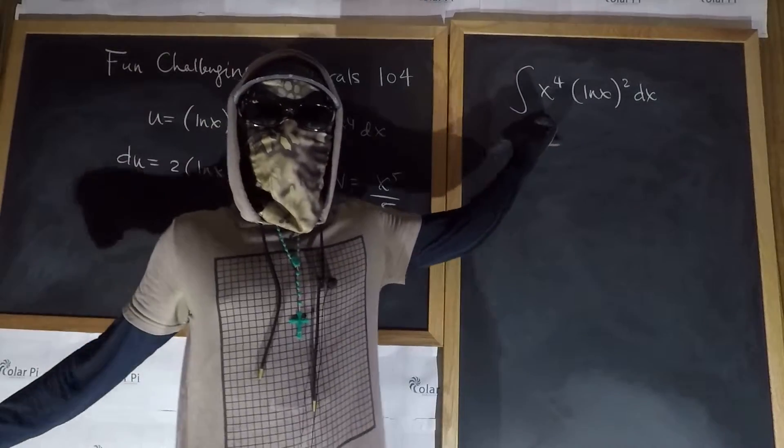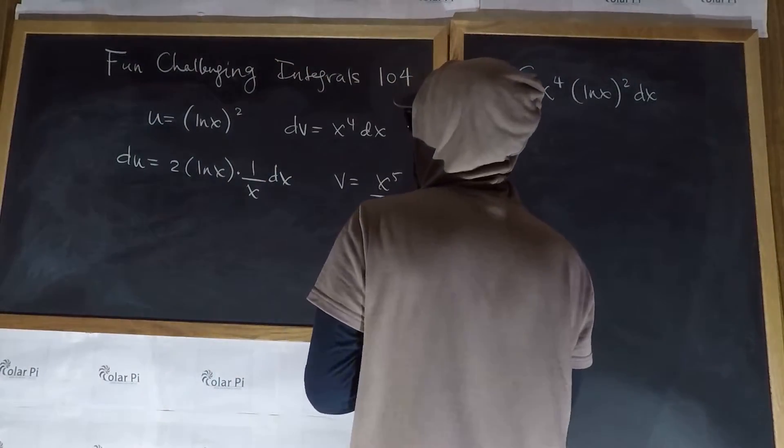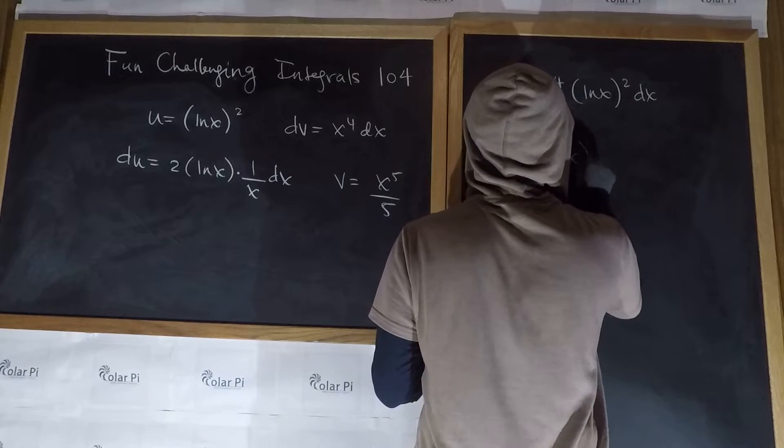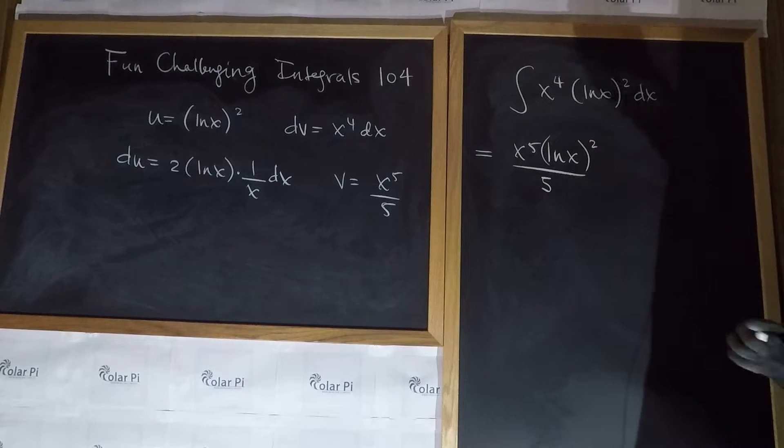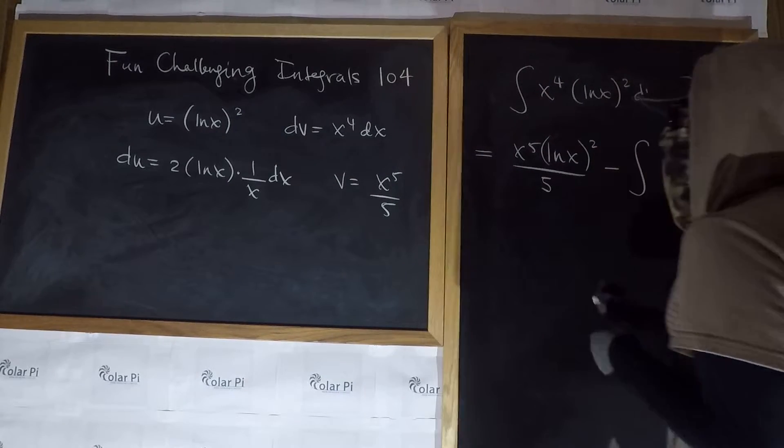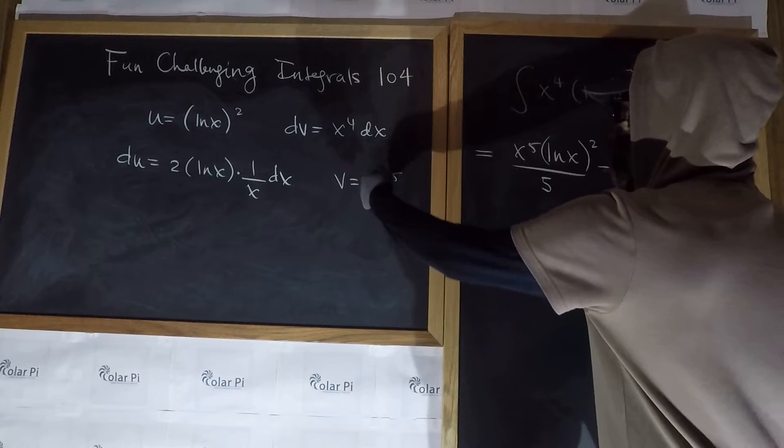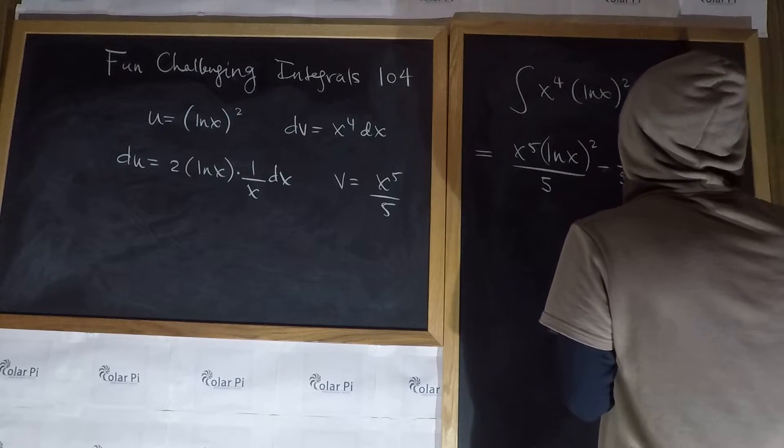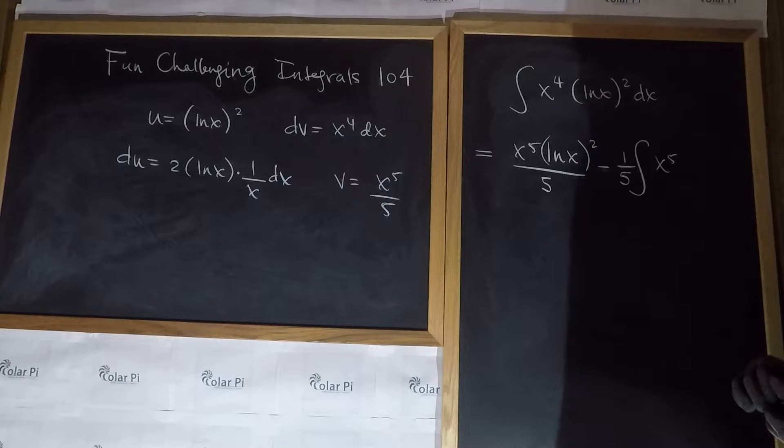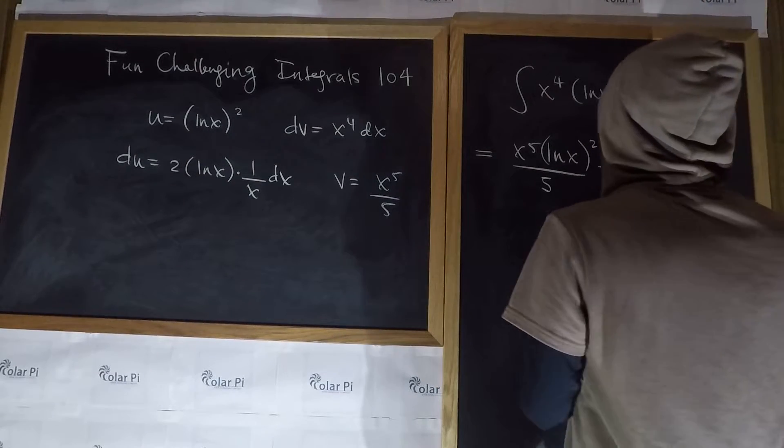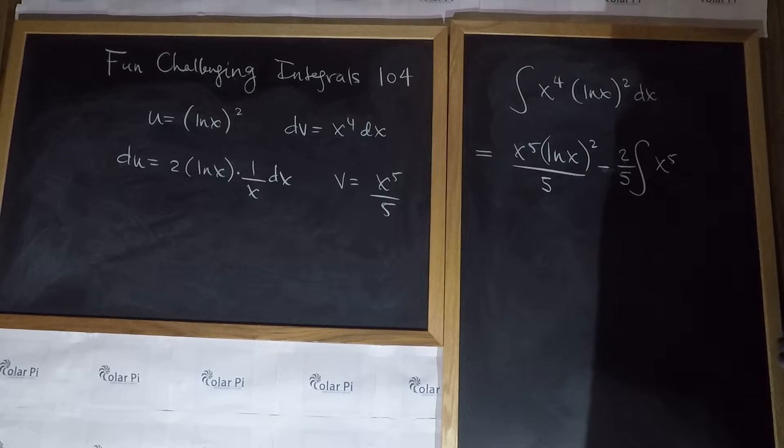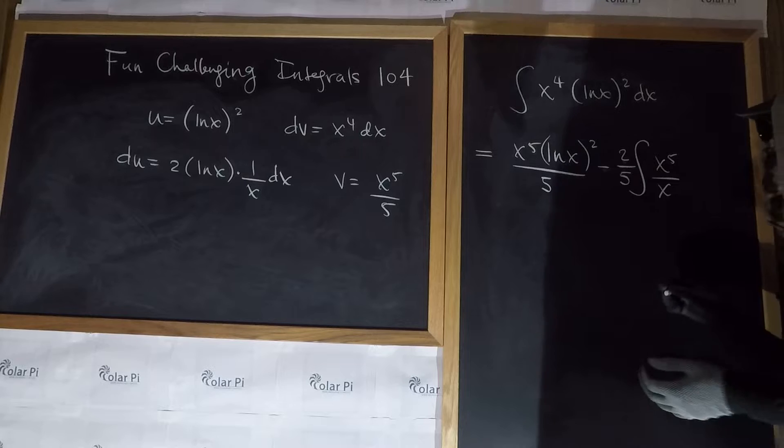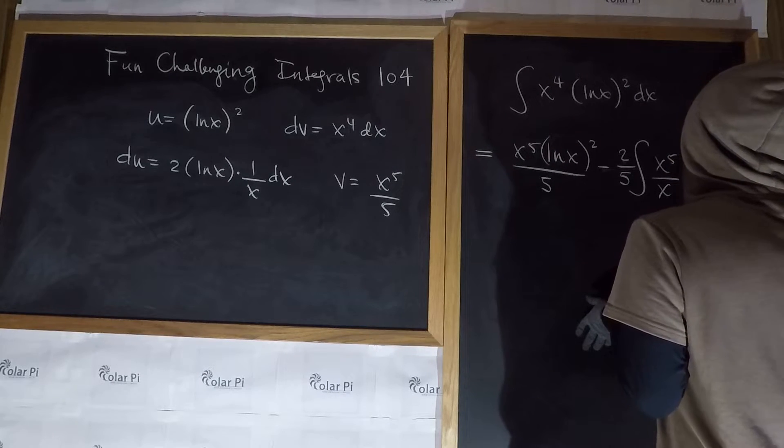Alright, so this integral is in the form u dv, and so it will equal uv. So that's x to the fifth ln of x squared over five, what I just wrote is uv, and then minus integral v du. So from the v, let's take the one over five and write it here, because I anticipate we're going to need space. And then x to the fifth, and then v du. The du is long, so let's put the two right there from the du, and the one over x, let's put as an x underneath x to the fifth, and then we just have ln of x dx.